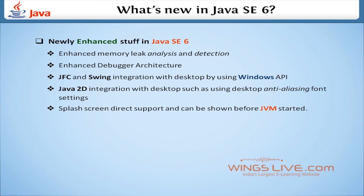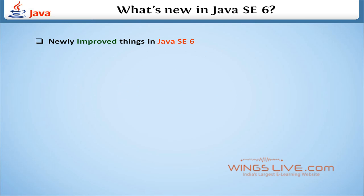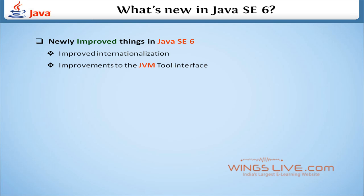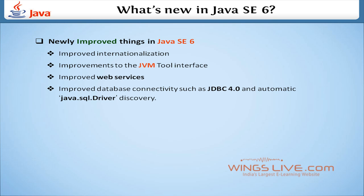Let's see the things newly improved in Java SE 6. The first is improved internationalization. Next is improvement to the JVM tool interface. There is also improved web services and improved database connectivity, such as JDBC 4.0 and automatic java.sql.Driver discovery.